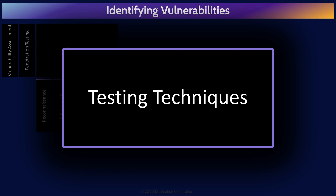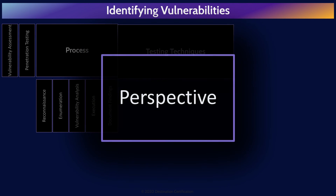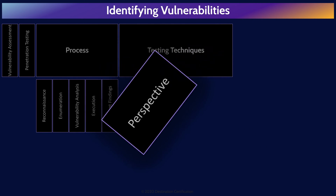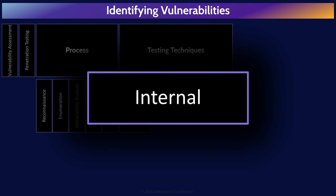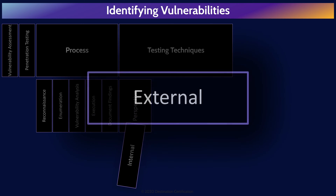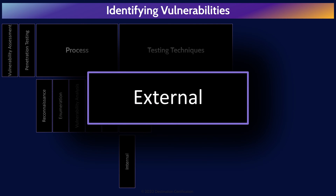Now let's go through some testing techniques we can use. We can mix and match these different techniques to achieve different types of tests — for example, simulating an outside attacker or a malicious insider. Perspective is about where the ethical hacker is performing the test from. Internal means the testing is performed from within the organization's network, simulating the attacker being on the inside. External means the testing is performed from outside the organization's network, simulating the attacker being outside the firewall, typically out on the internet.